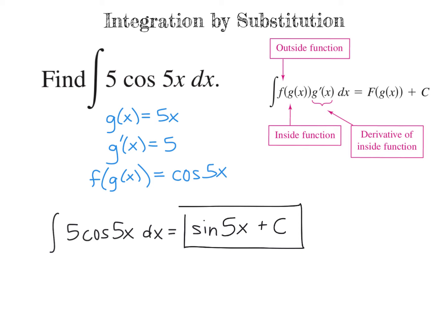Let's check our work by taking the derivative. The derivative of the sine of 5x is cosine of 5x. Then using the chain rule, we multiply by the derivative of the inside, which is 5. So we can rewrite this as 5 cosine of 5x. The derivative of c goes away, so we did get it correct because that is our original integrand, meaning we found the antiderivative correctly.